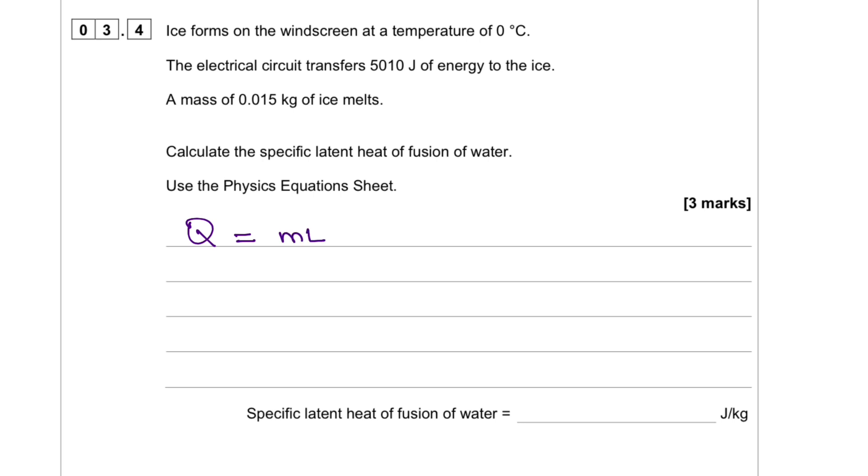So we can write the Q, which is the energy. And making L the subject, L equals Q over M. We can populate that with the values, which is 5010 over the mass 0.015, and that equals 334,000 joules per kilogram. So the specific latent heat of fusion of water is 334,000 joules per kilogram.